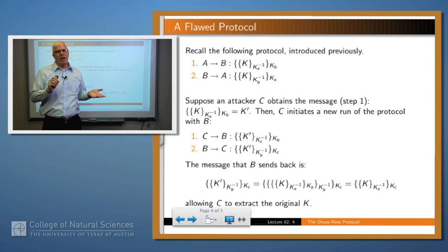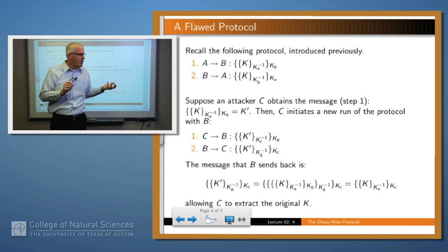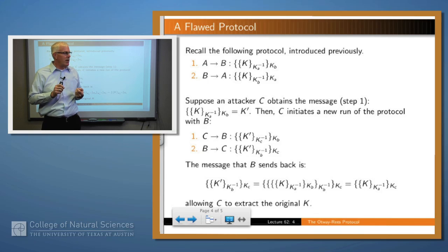I'm going to tell you now why it is. Suppose the attacker has been listening to this conversation and now has the messages from steps one and two of a previous run of the protocol. Then the attacker C can initiate a new run of the protocol with B using the previous message from step